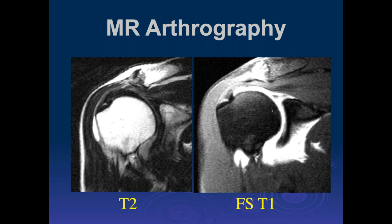On the T2 image there's no full thickness tear of the supraspinatus, but on the post-contrast arthrogram image there's increased signal along the articular surface of the supraspinatus — a high grade articular surface tear. There's also fluid in the subdeltoid bursa, which is very bright on T2. The contrast isn't as bright for reasons discussed. This is not communicating with the joint space since we don't see contrast in the bursa on fat sat, but we do see this partial tear of the supraspinatus insertion and likely a SLAP tear in the superior labrum.